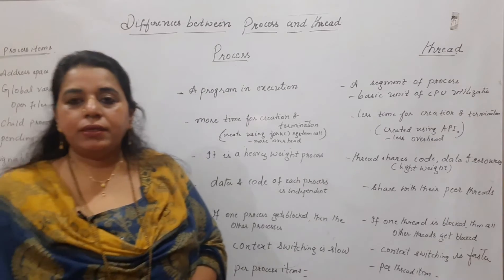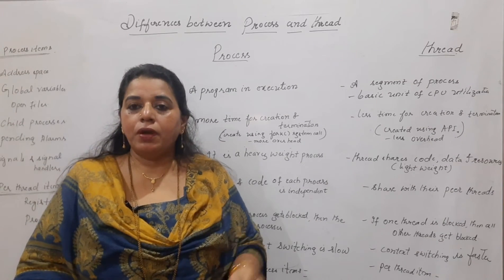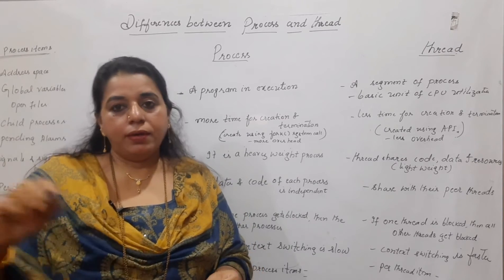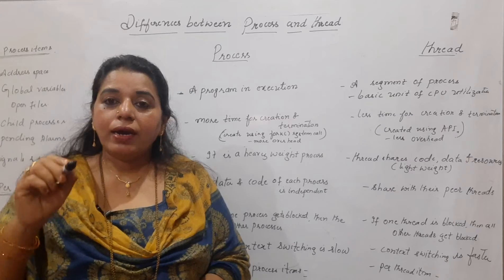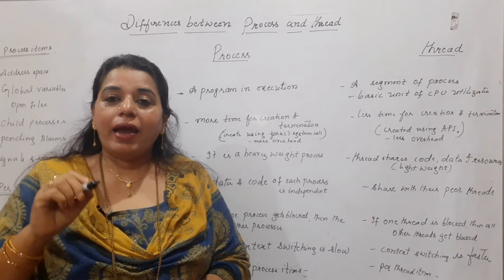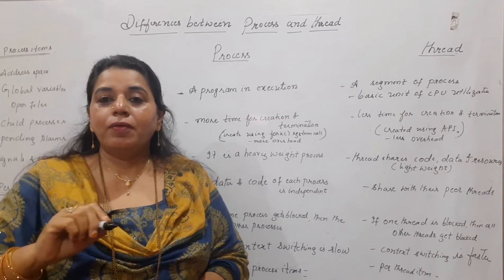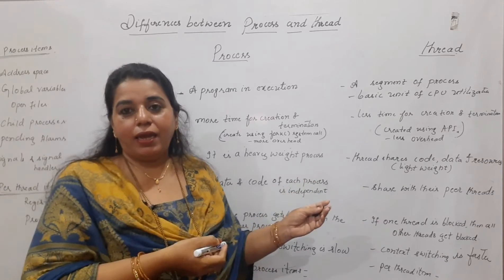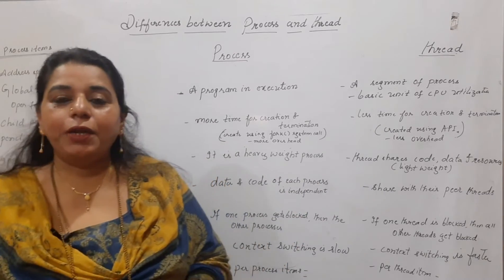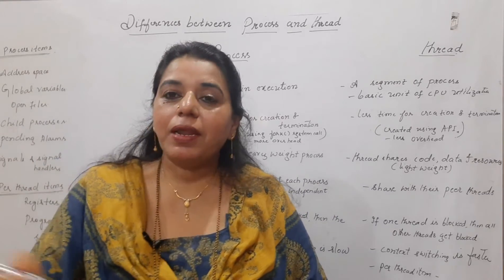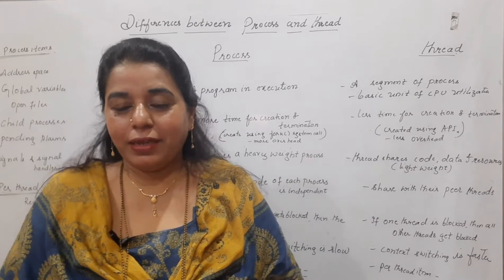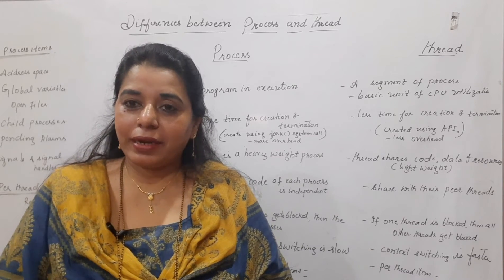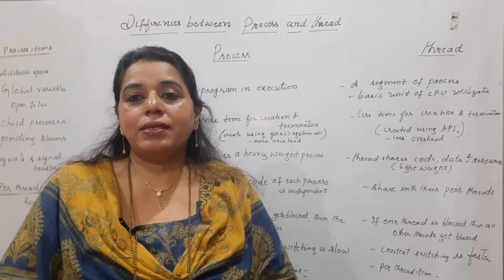When we say basic unit of CPU utilization, even a process is a unit of CPU utilization — the process is also getting executed, and a thread is also getting executed. But a thread is a mini process, and this mini process, when it takes the processor for execution, is similar to how a processor is assigned to a process. A processor is also assigned to a thread to carry out the execution. In either of these cases — processes or threads — actually one job is done at a time only.